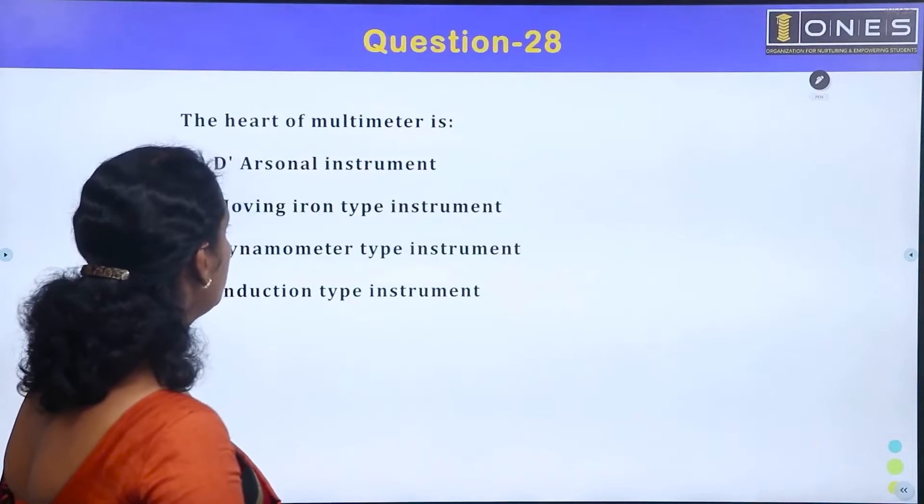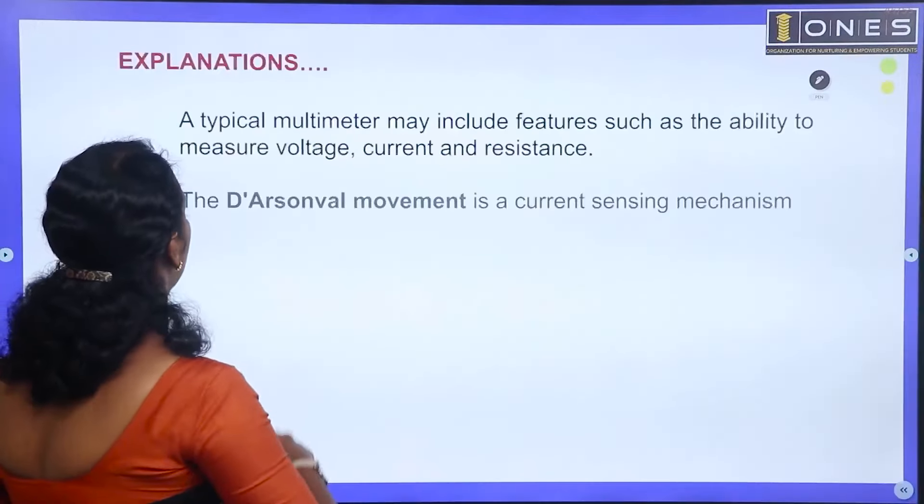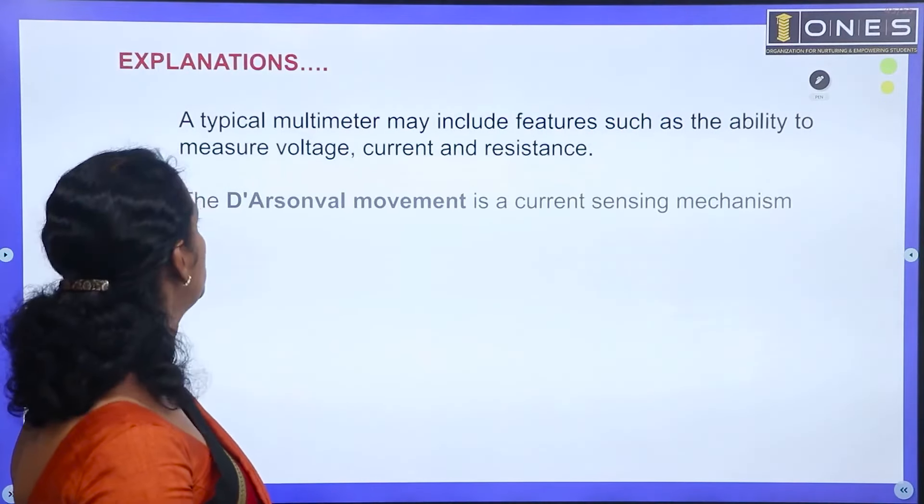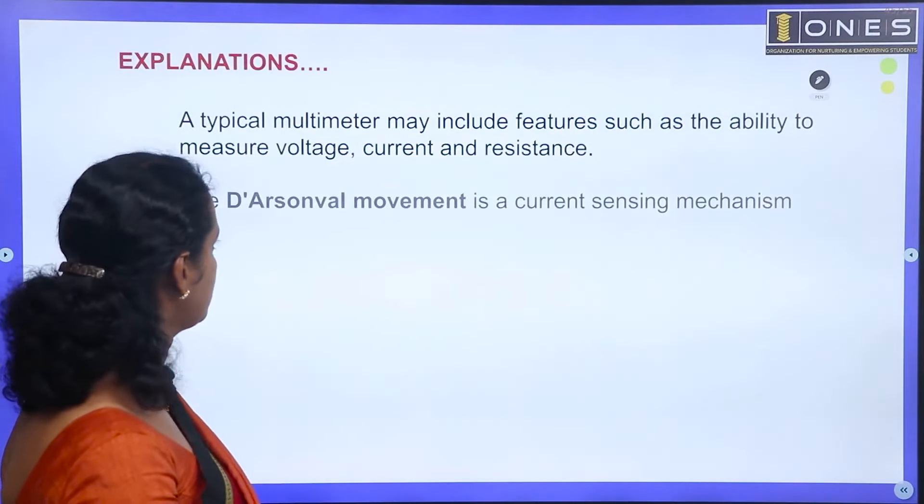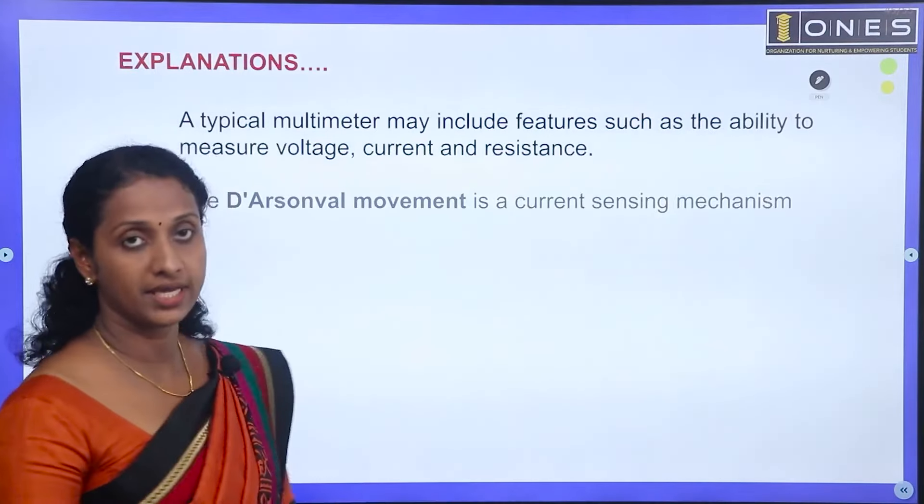The heart of the multimeter is the D'Arsonval instrument. A typical multimeter may include features such as the ability to measure voltage, current, and resistance. The D'Arsonval movement is a current sensing mechanism.